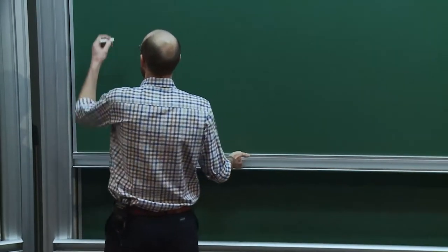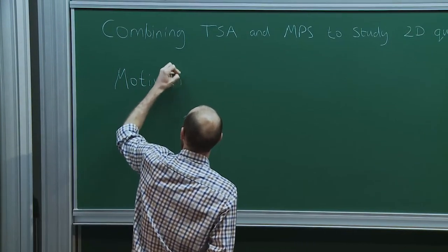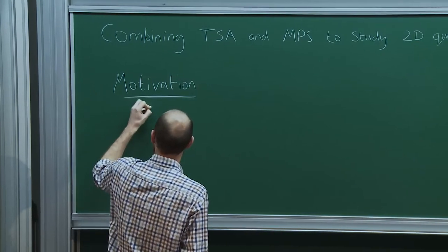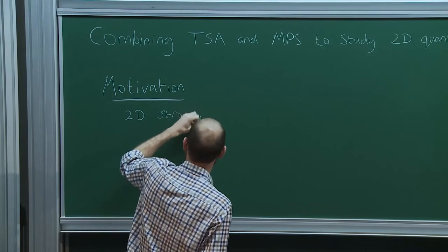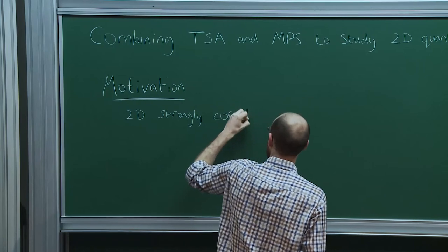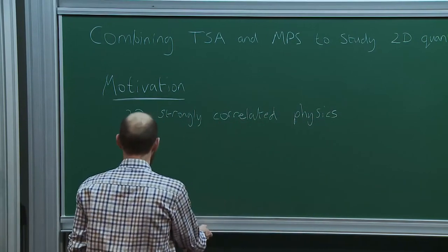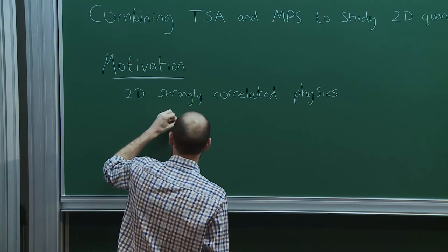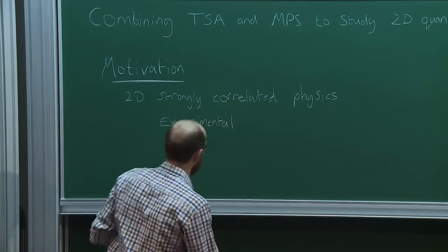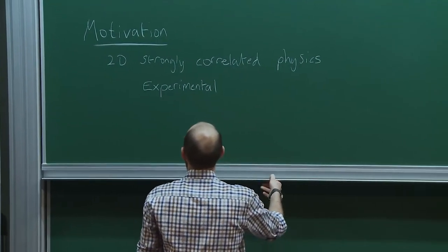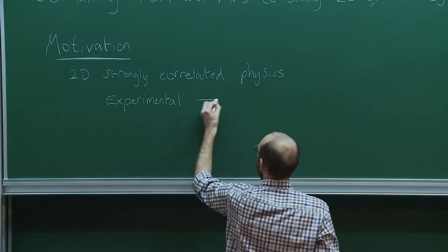First of all, the motivation. Obviously we'd like to learn something about 2D strongly correlated systems — not least because of experiments. There are experimental realizations of layered systems, quasi-2D systems, or in the case of graphene, systems that are truly 2D, though graphene is not a strongly correlated system. So experimental realizations include things like the cuprates.